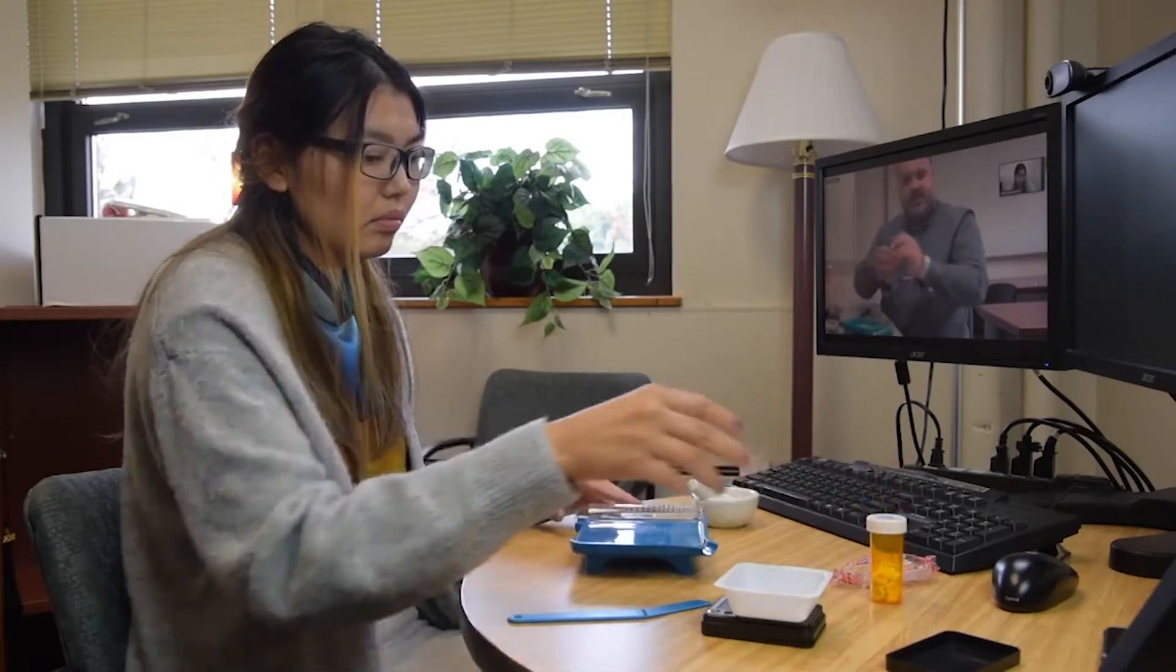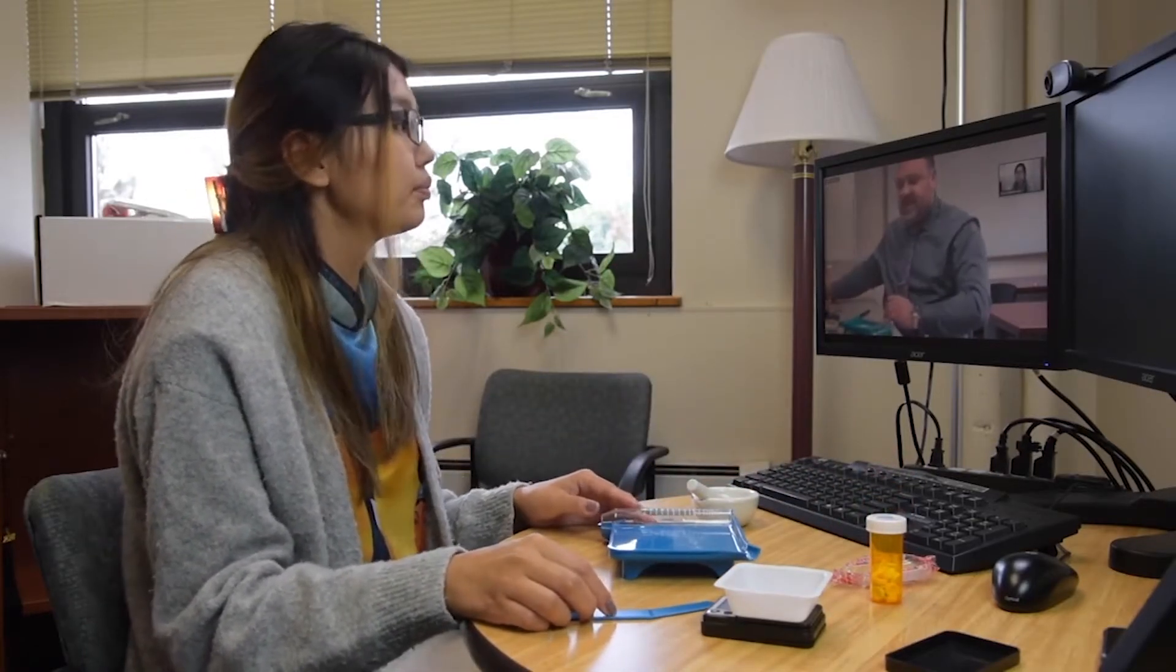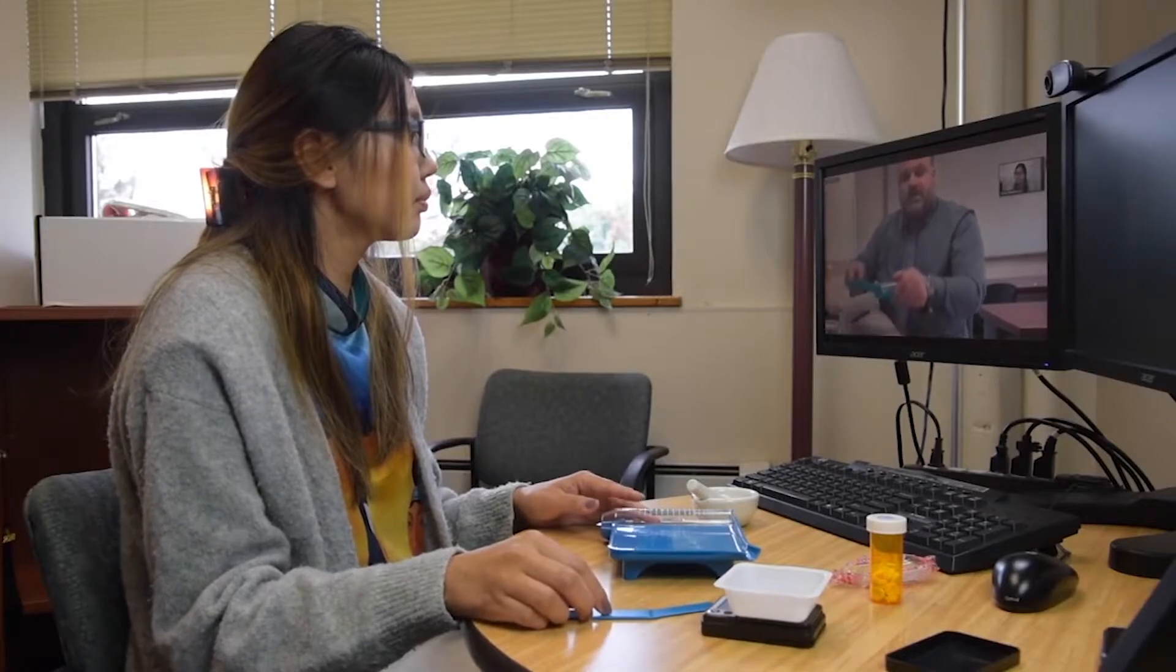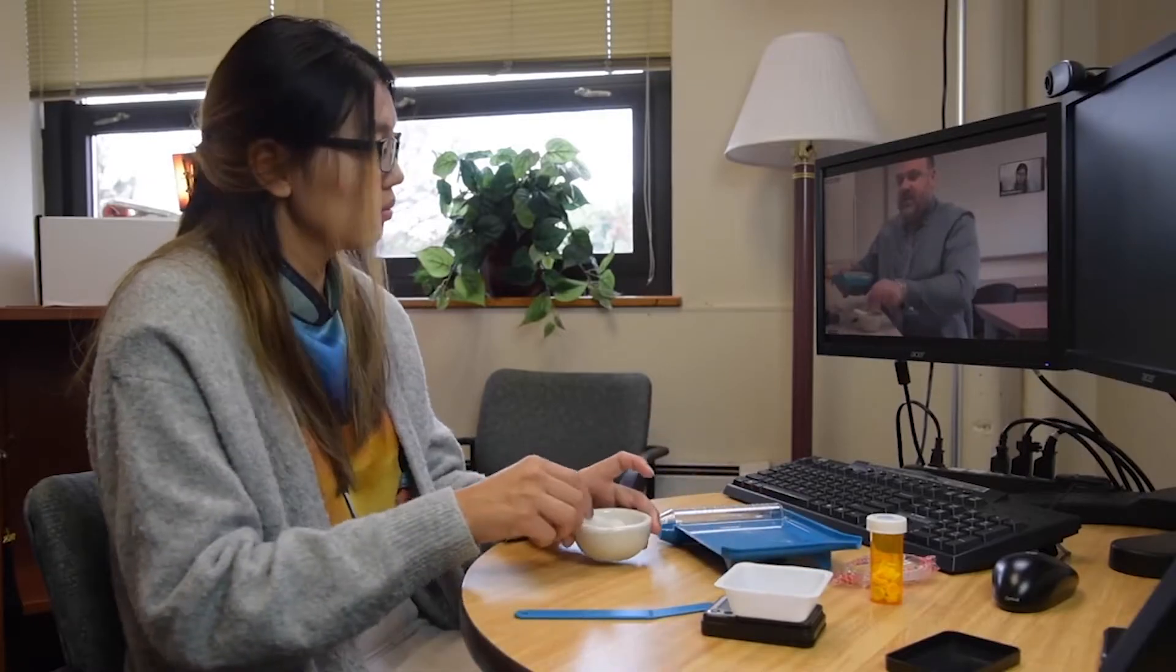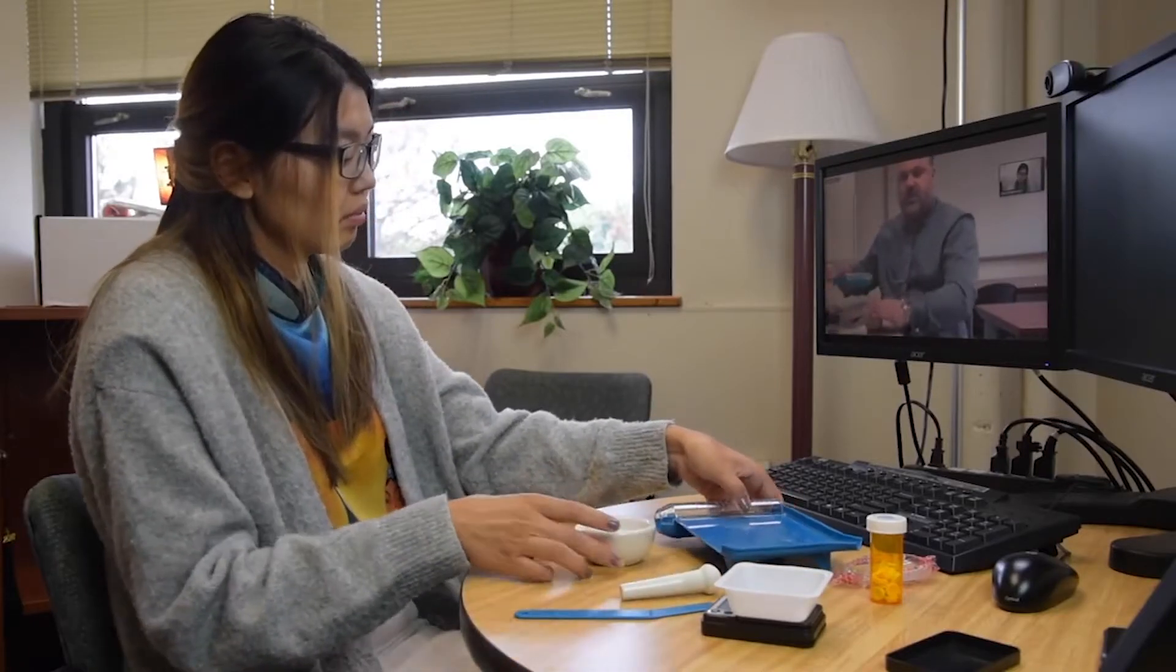And then go ahead and set your prescription vial with the extras off to the side. Take the five that you counted out and then you're going to place them into your mortar.